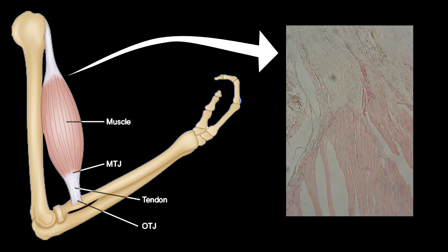At the musculotendon junction, the endomysium of each muscle fiber fuses and, in conjunction with the endomysium of other myofibers, perimysium and epimysium, forms tendons. In this frame, you can see the demarcation between tendon and muscle.